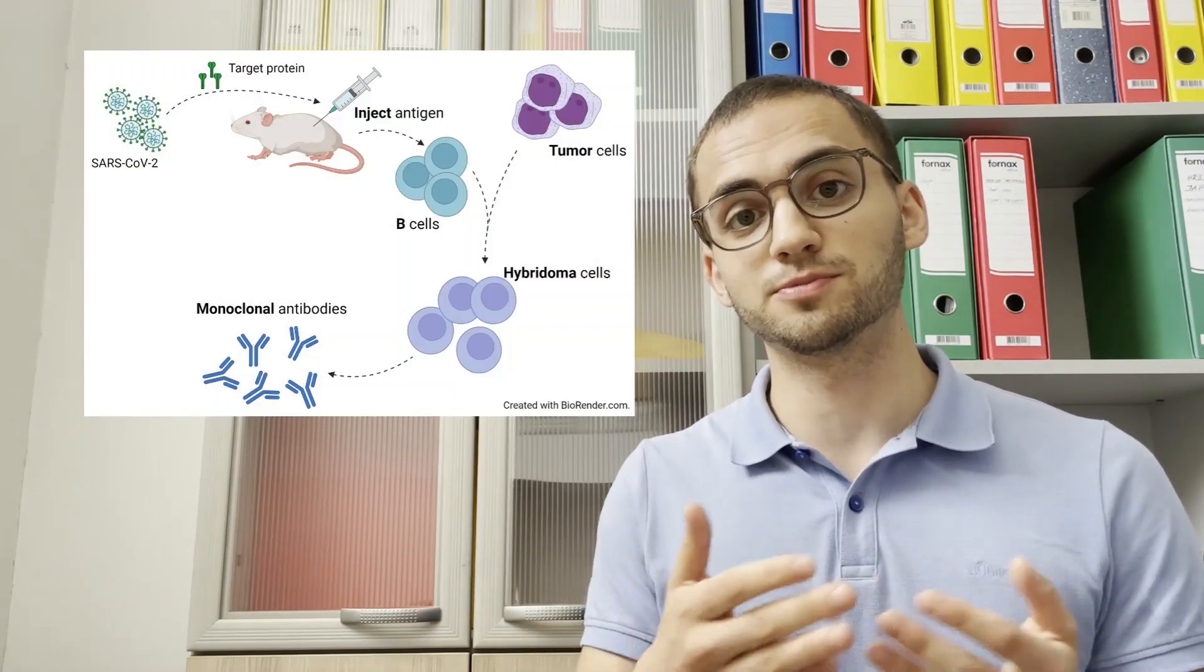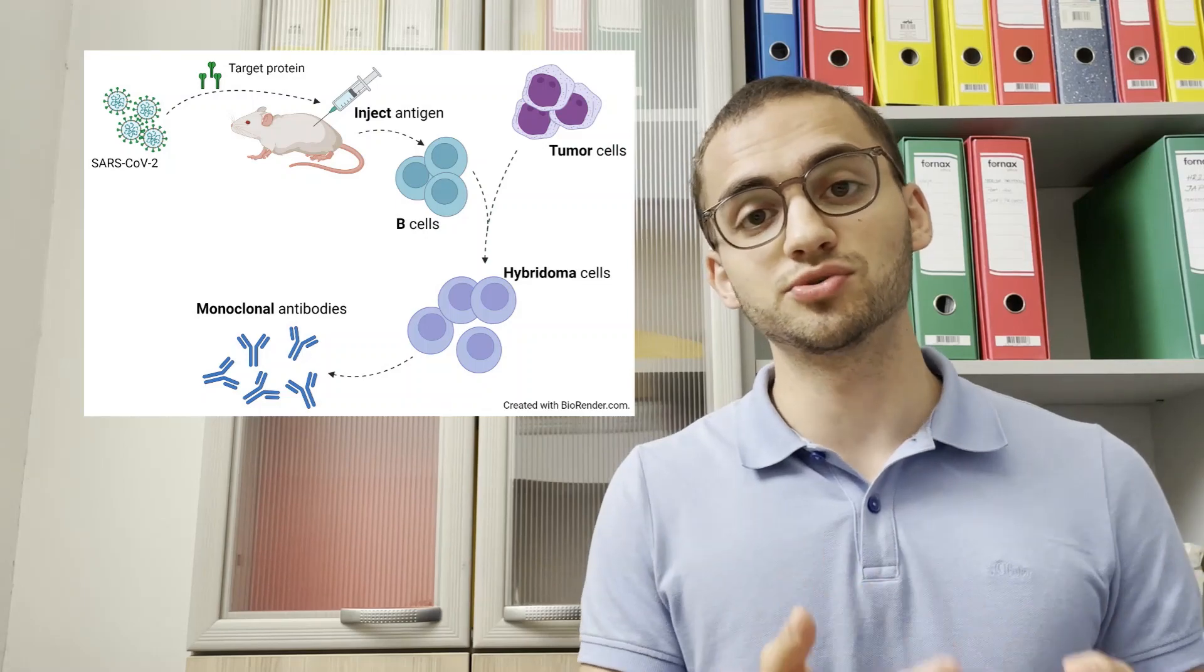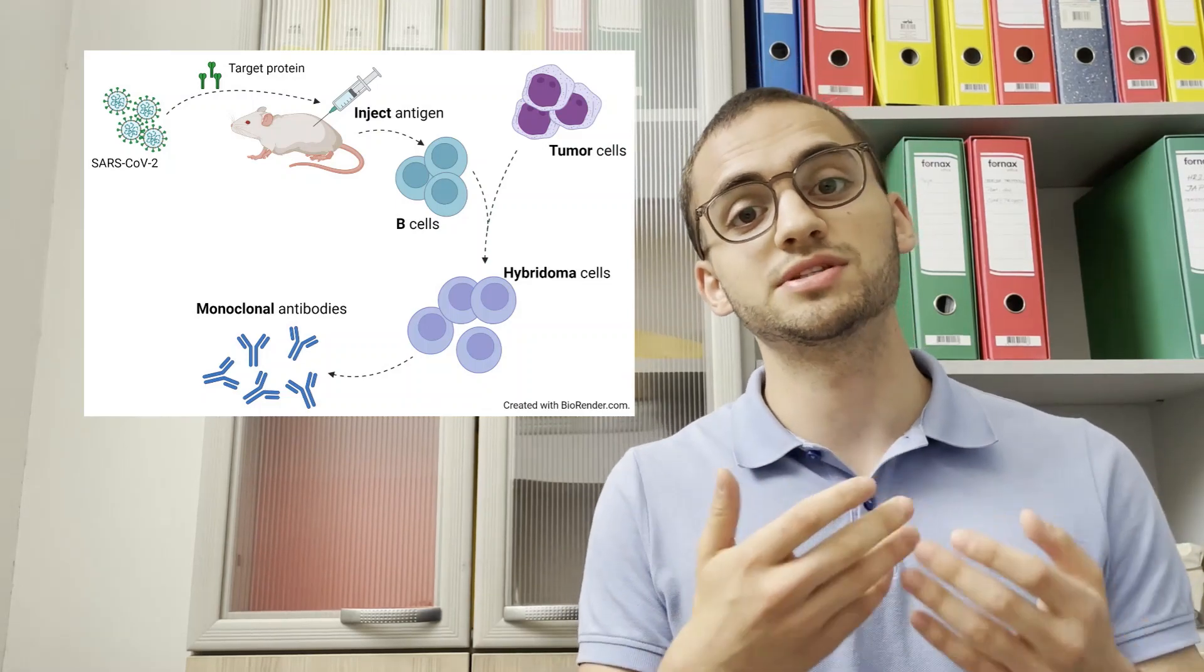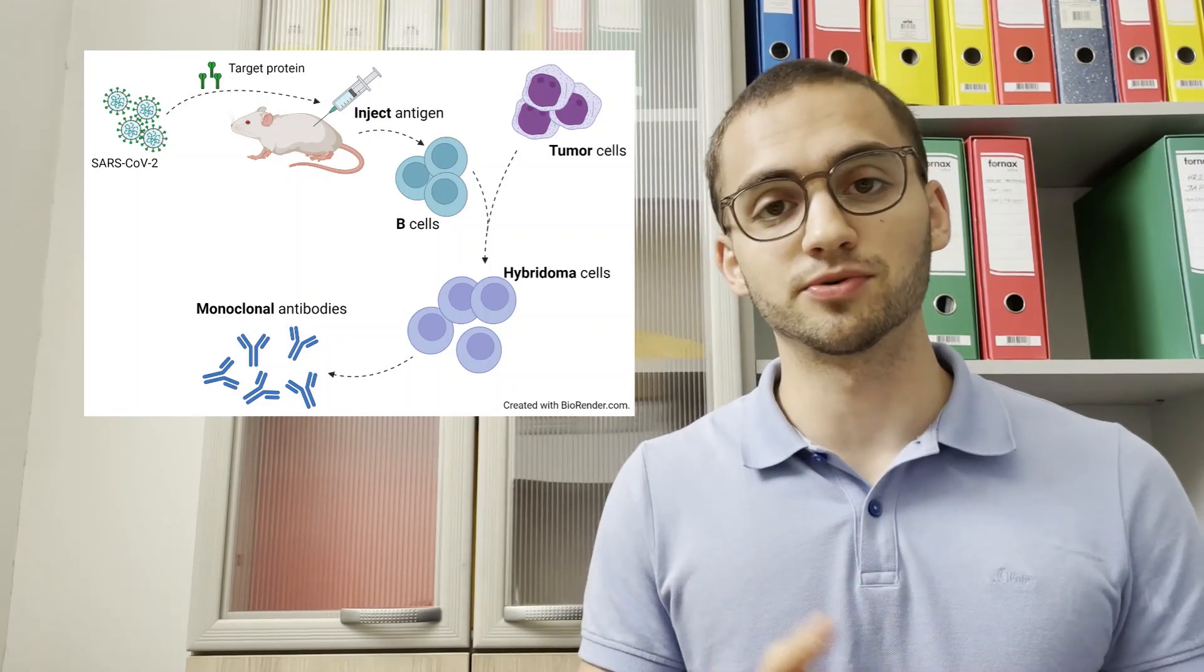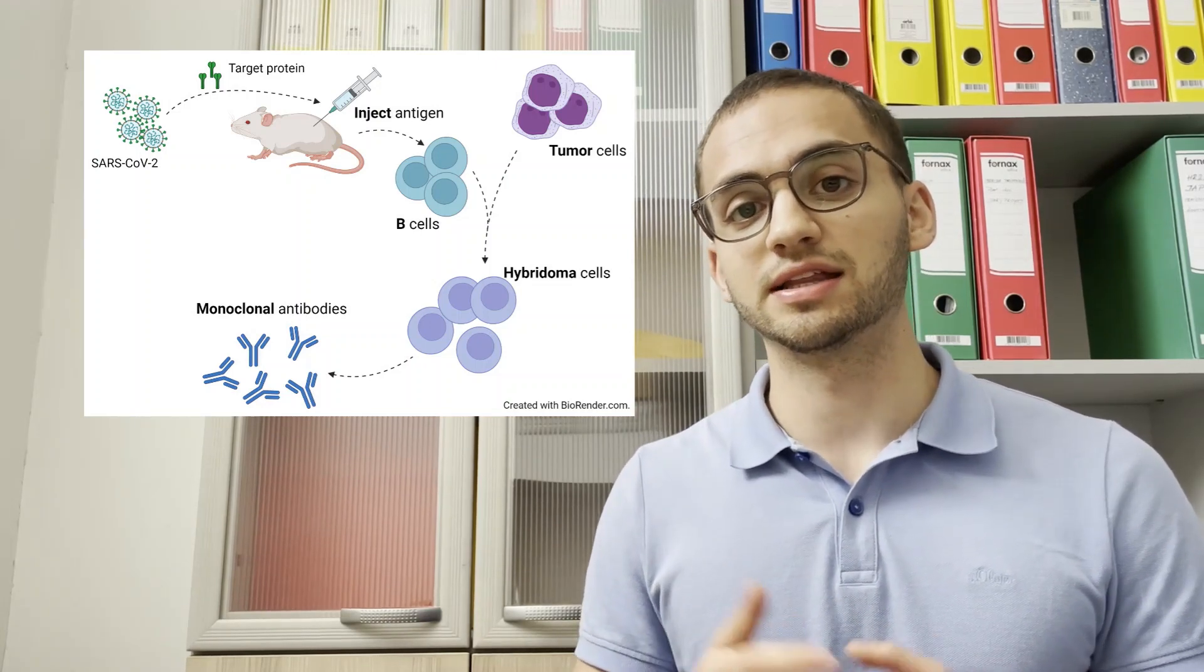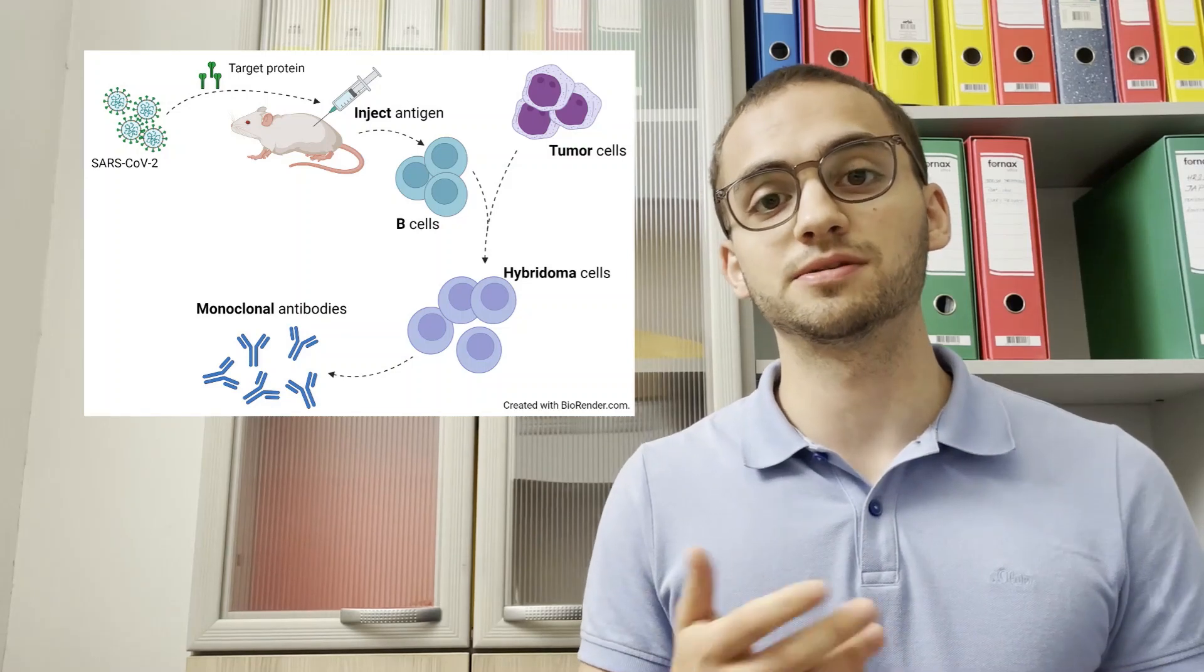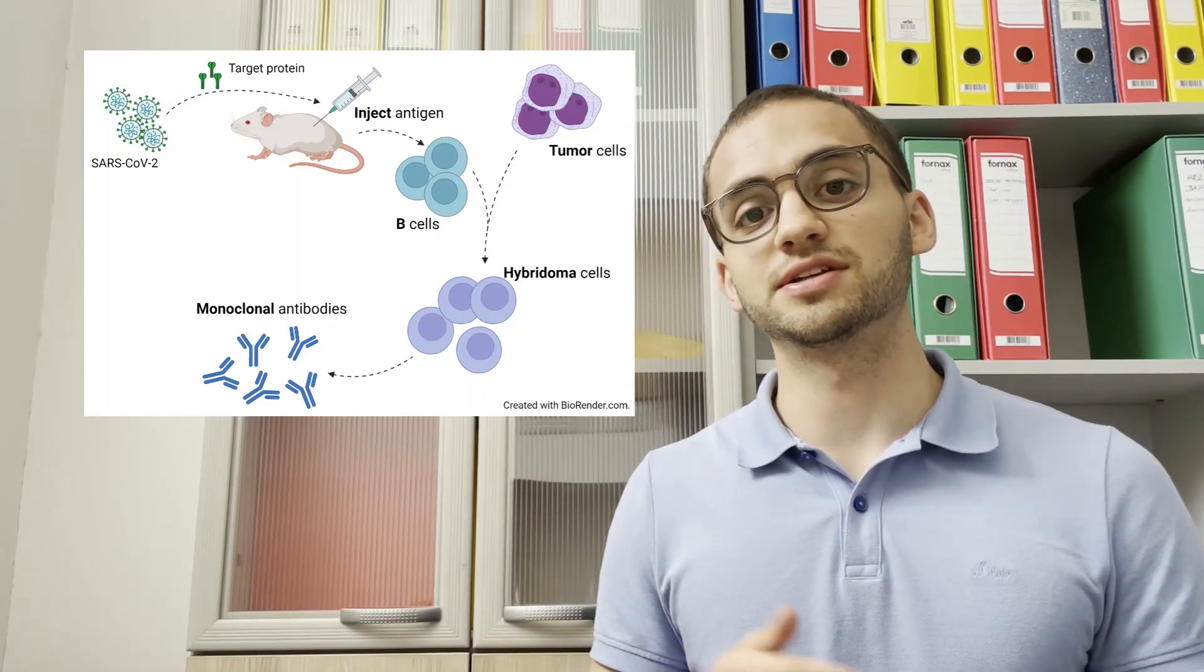We have employed different molecular techniques to first produce the target protein for immunization. Upon exposing mice to this protein, we wait for the immune system to respond and then collect immunocompetent B cells.